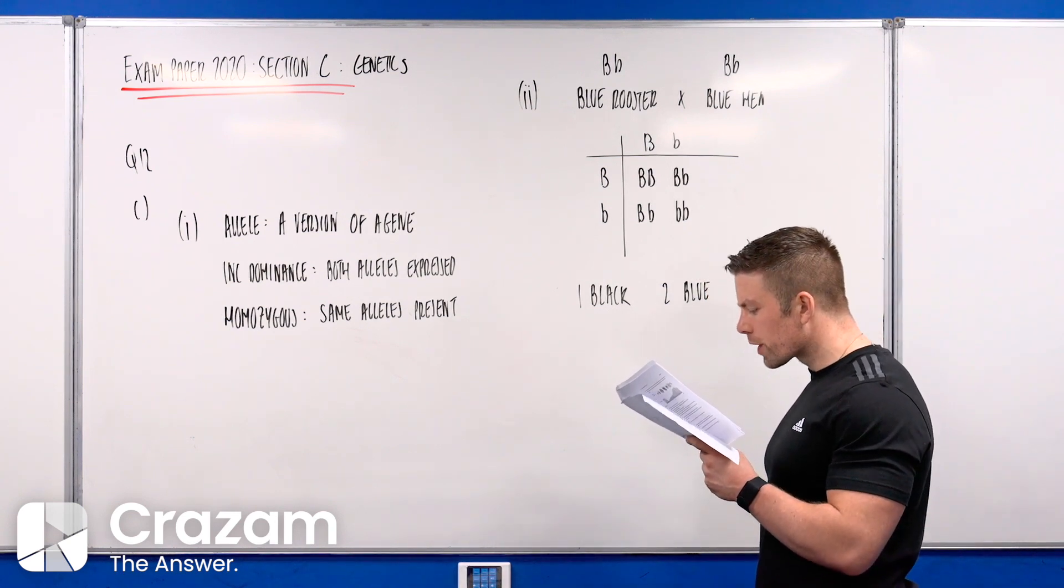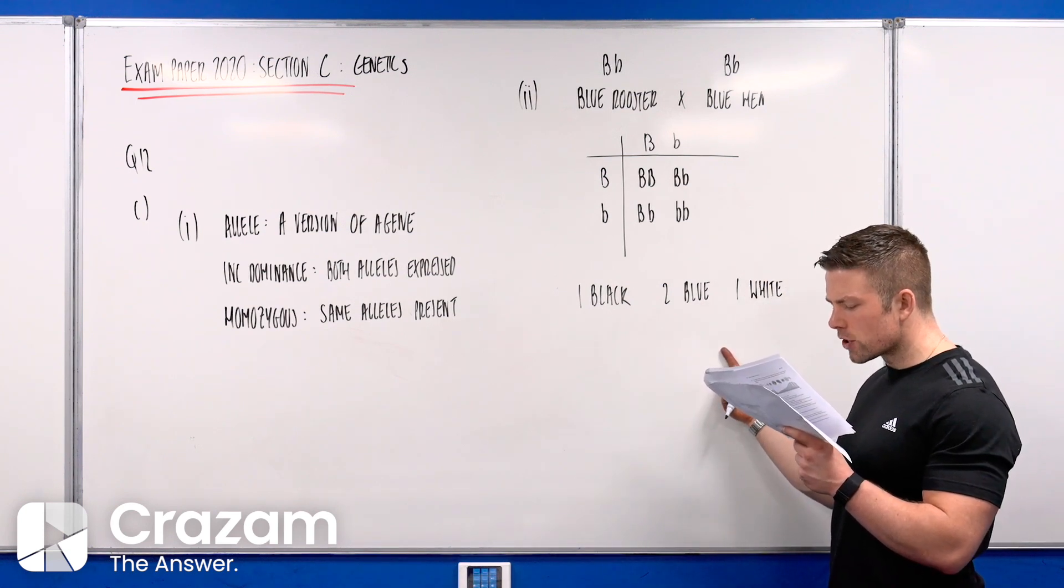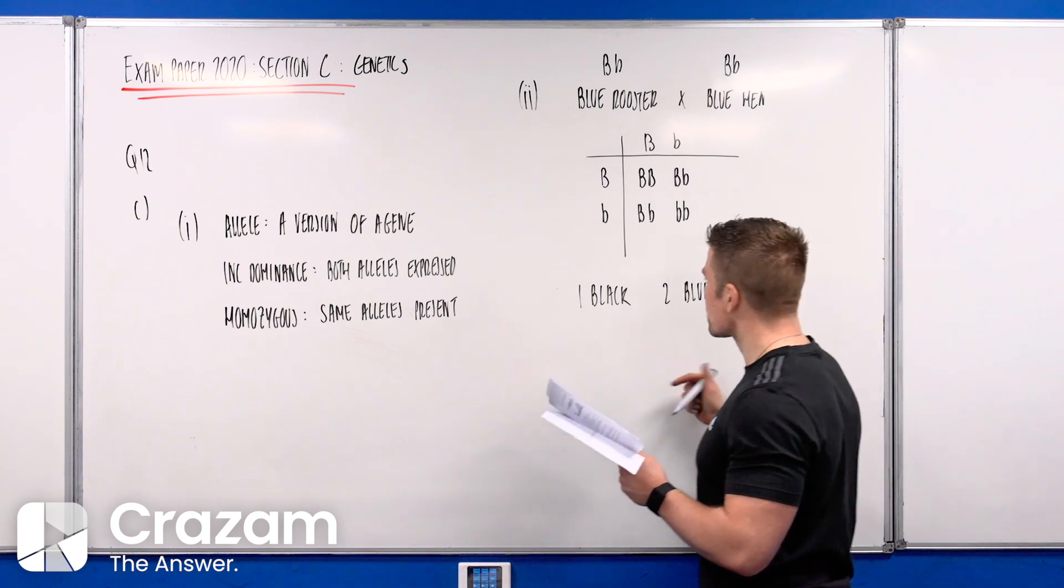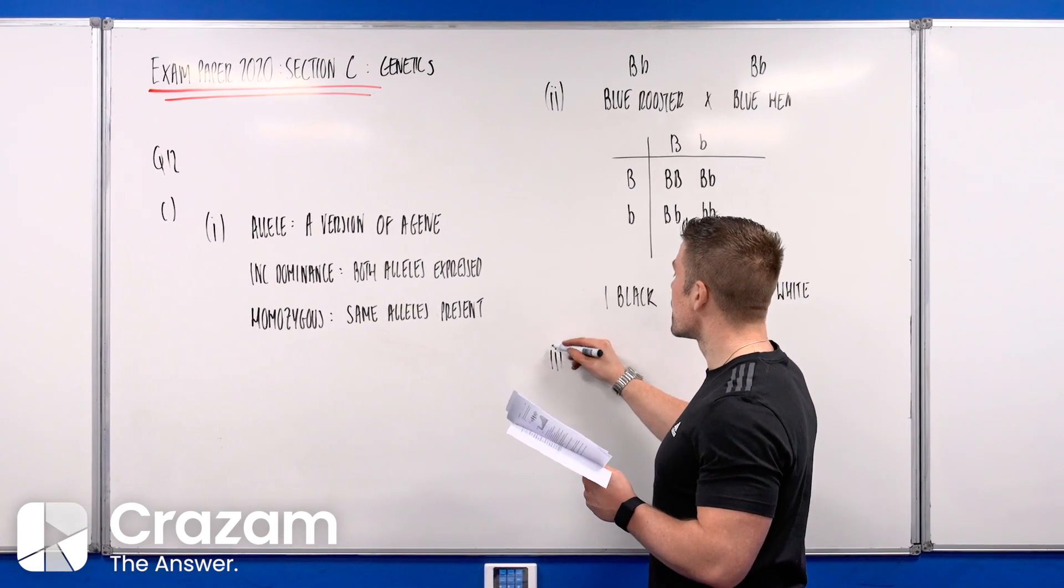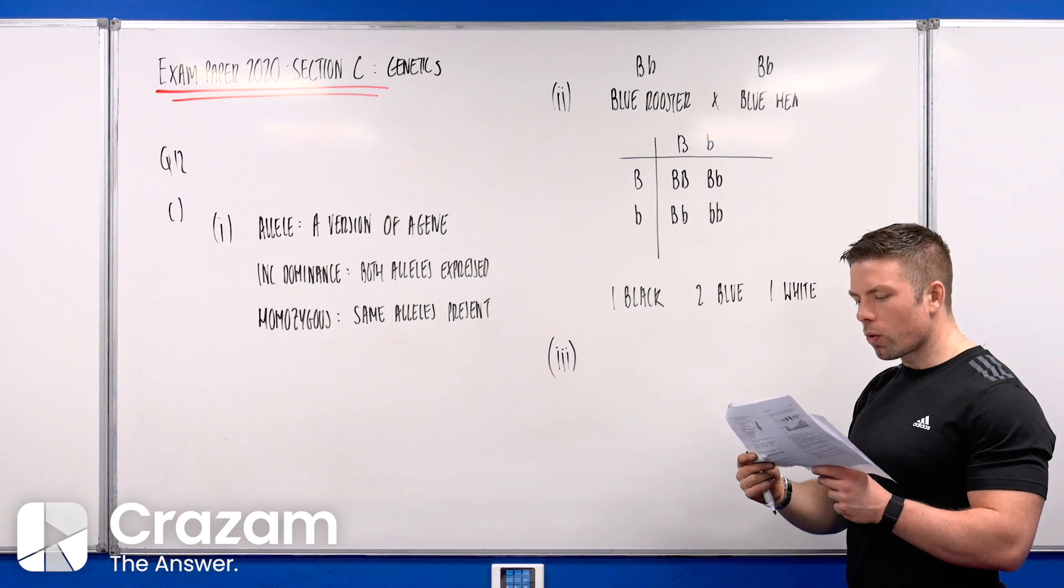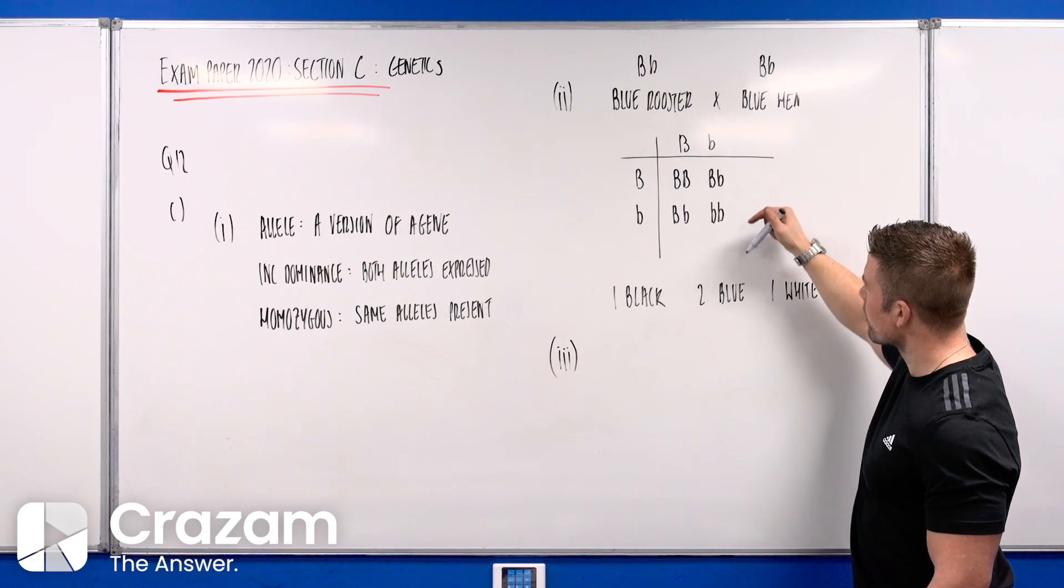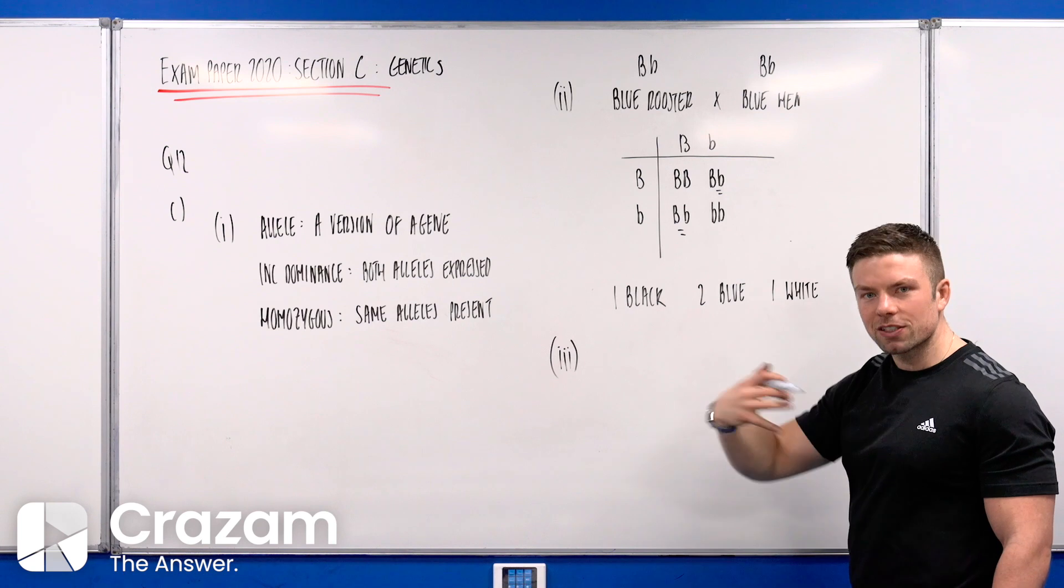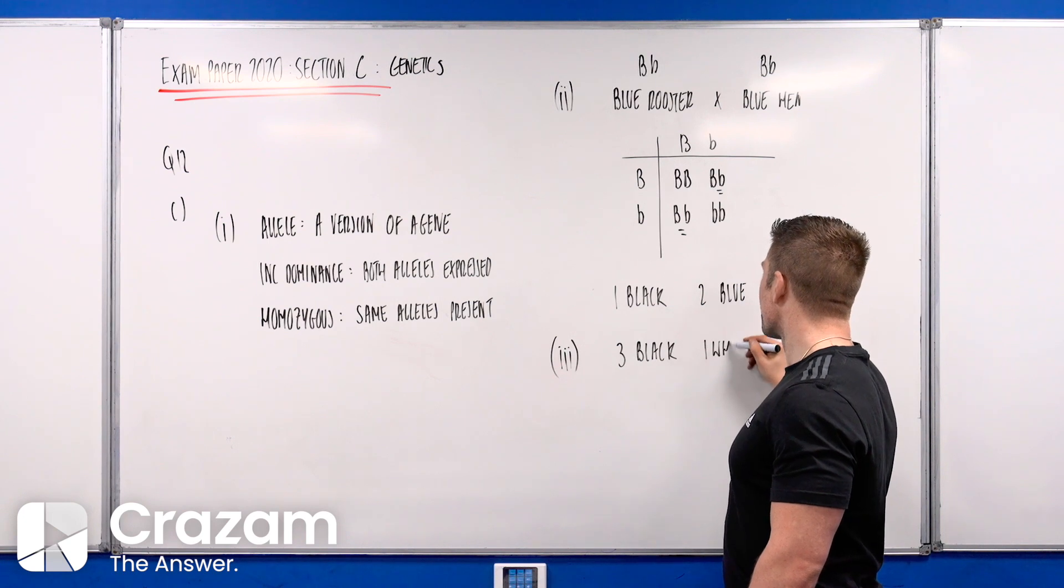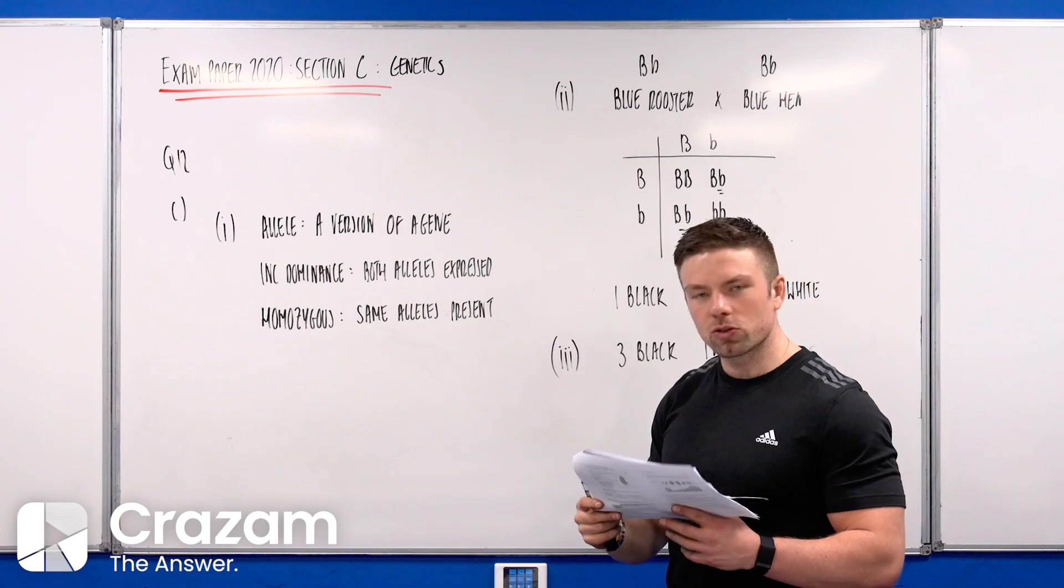Part 3 says what would be the effect on the offspring phenotype ratio in the genetic cross above if there was no incomplete dominance and black feather was the dominant trait? If there's no mix to color, we'd still get the same genotype, but the phenotype would be different. This and this would be expressed physically as black, so we'd have three black and one white.